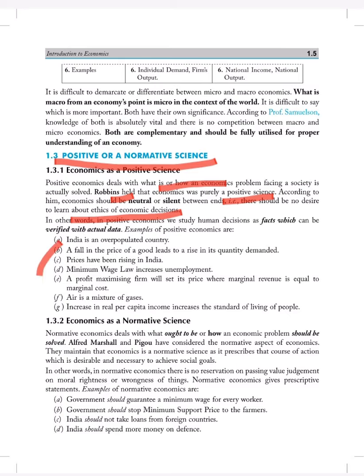What were their facts? India is an overpopulated country. Positive economic means a fall of the price of the goods leads to the rise in quantity demanded. It is quite simple.